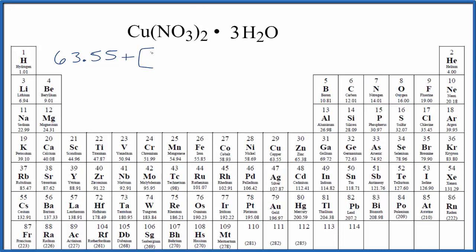Nitrogen is 14.01 grams per mole and then oxygen right here, 16.00 grams per mole and we have three of these oxygen atoms. So we'll multiply by three and then we're going to multiply all of this here by two. We'll close our brackets and put a two out here. This is the molar mass for the copper 2 nitrate.